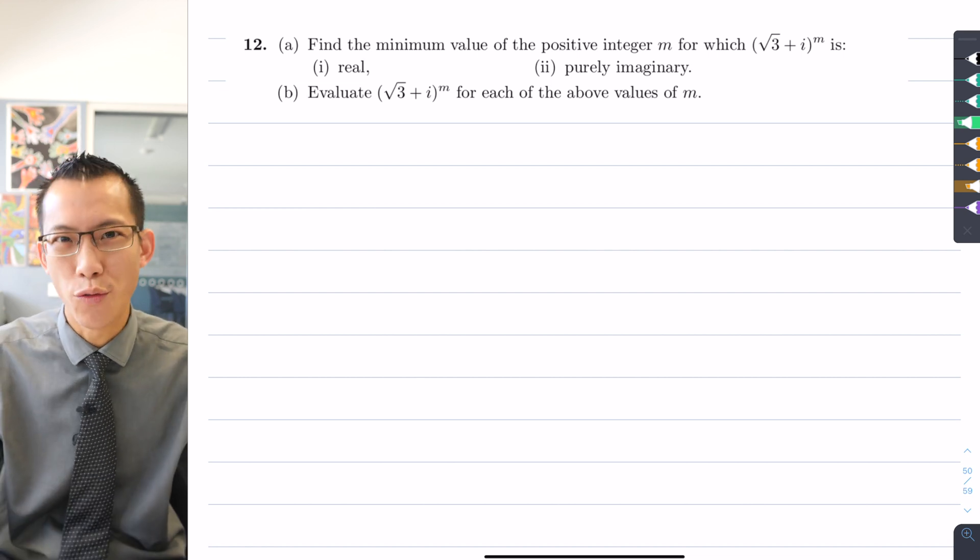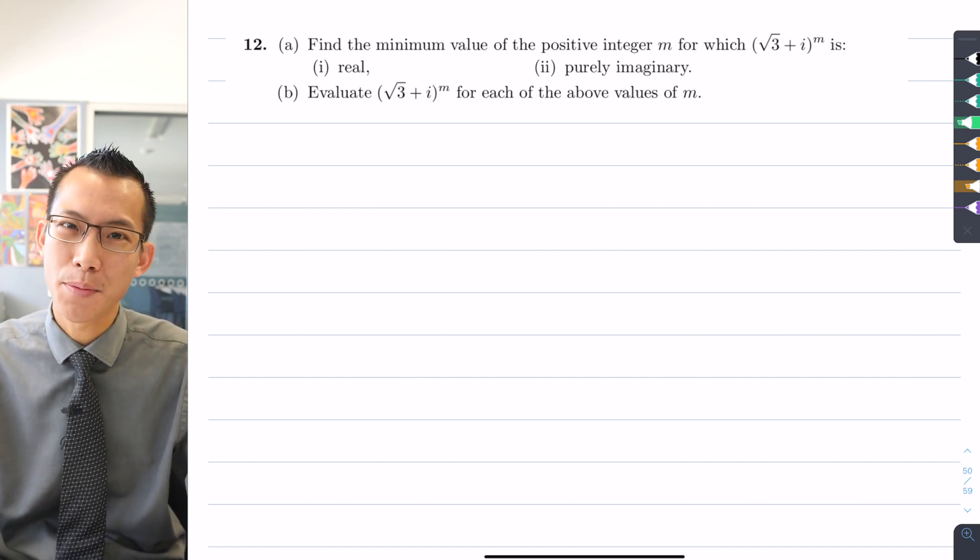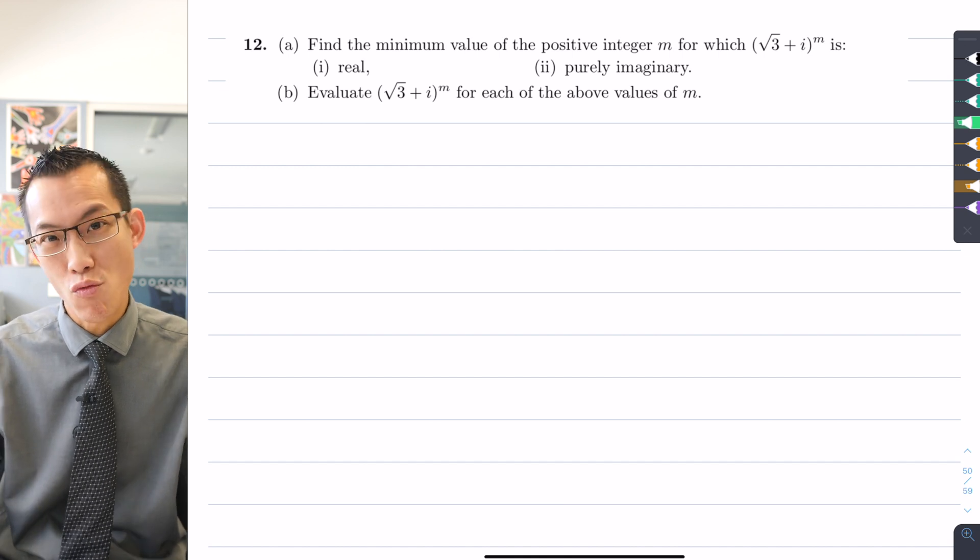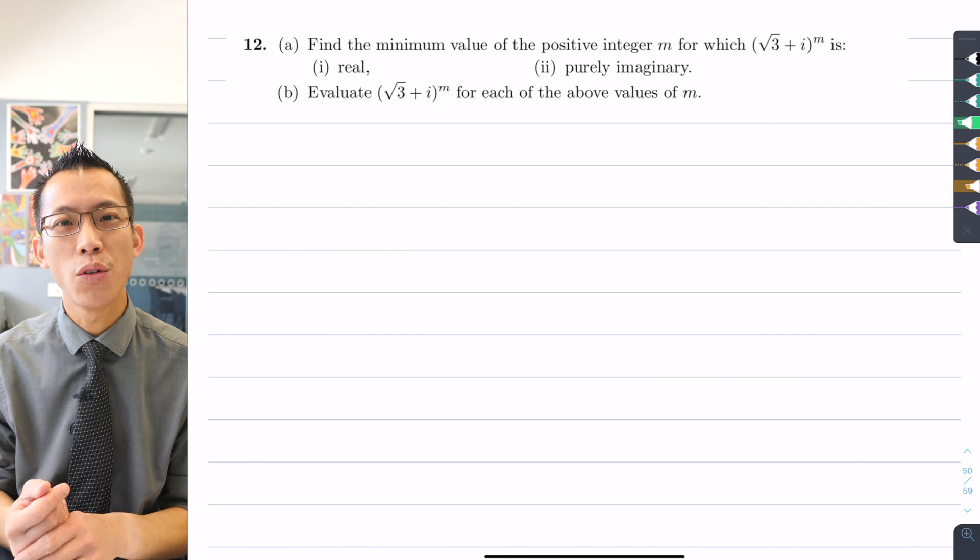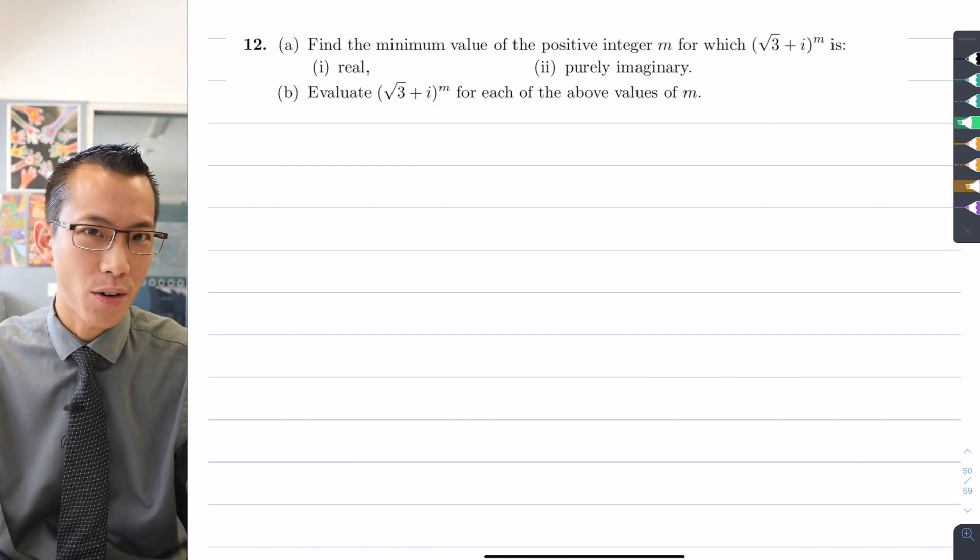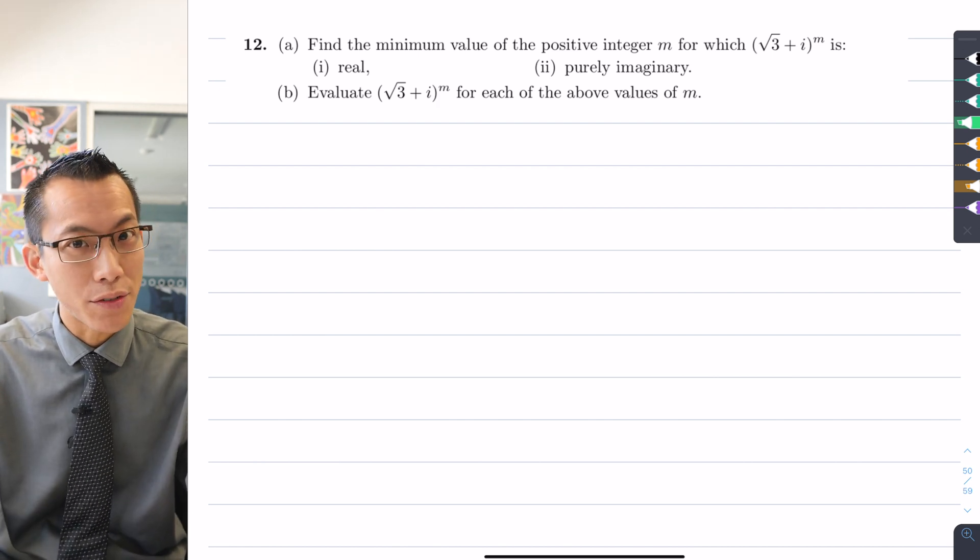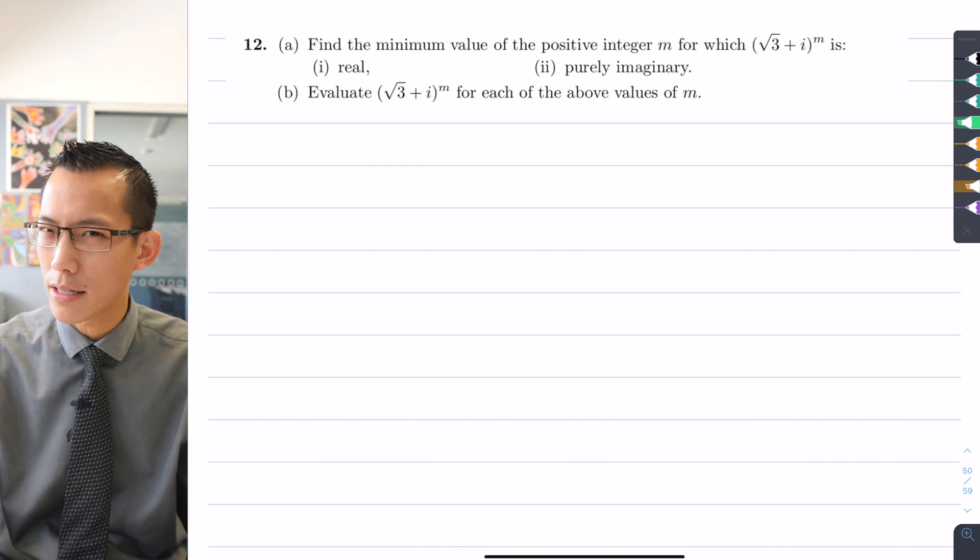We've used the exponential form of a complex number to help us prove de Moivre's theorem. De Moivre's theorem all by itself is a very powerful result that we can use to simplify questions and answer a whole bunch of different kinds of problems that were sort of inaccessible to us before.